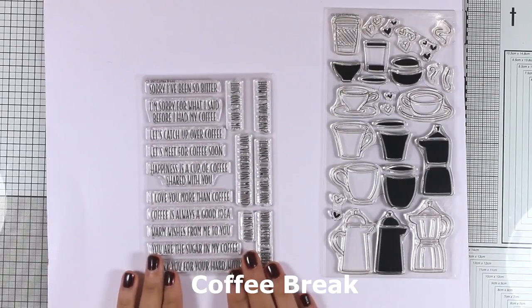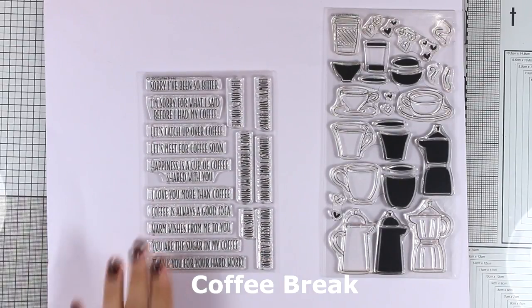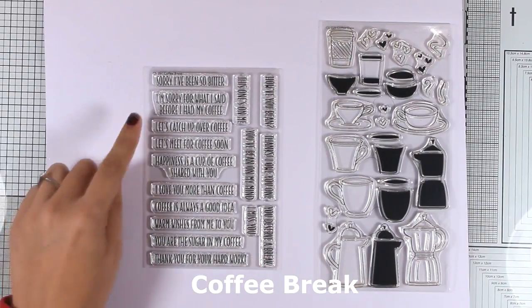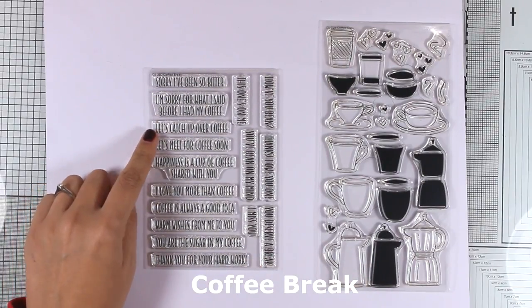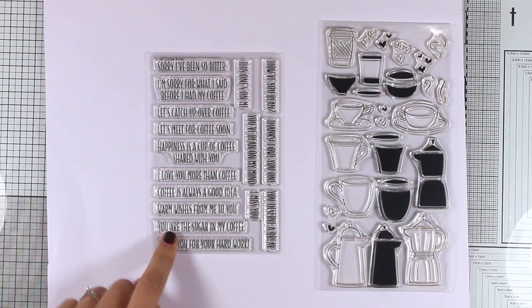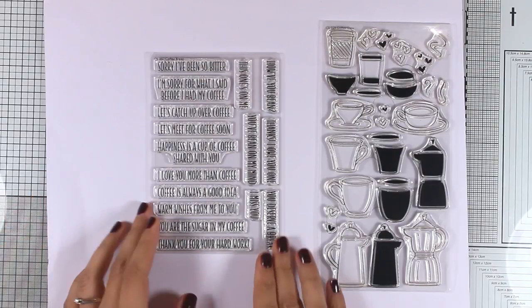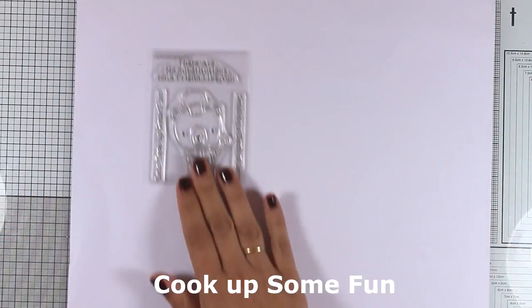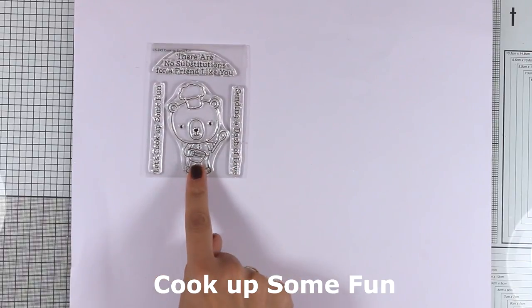As you can see, there are no sentiments in this stamp set, but there is a stamp set released this month called Coffee Break, and all the sentiments go perfectly with that stamp set. There are sentiments that would go great if you are a tea lover, such as 'you deserve a break,' 'I miss you,' 'this one is on me,' and many more options. Let's move on to the smallest stamp sets for this month.